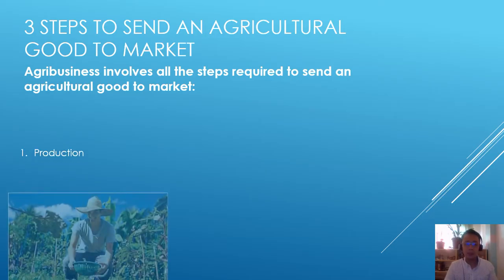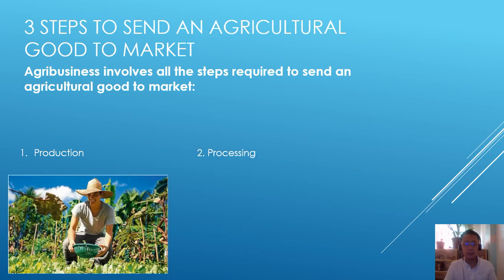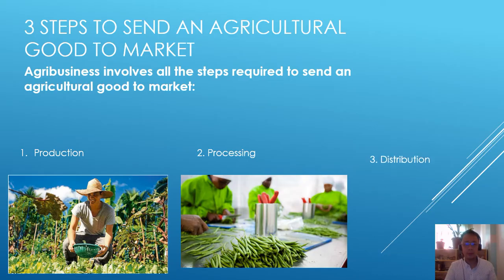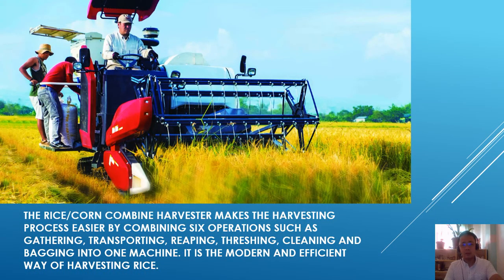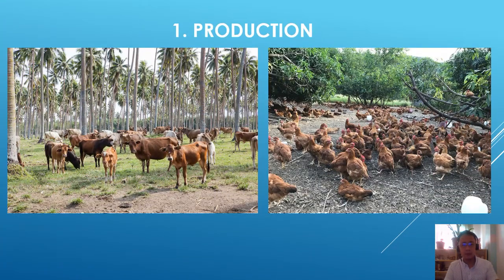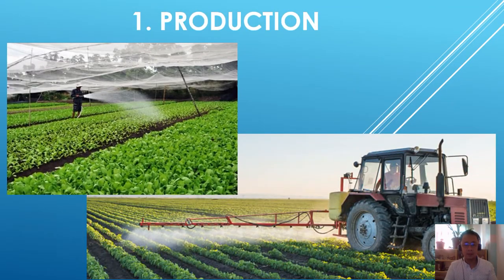The first step is production. This includes rice harvesting — you can see the rice harvester — as well as cattle raising. Another example of production is free-range chicken, and also the production of lettuce, including using advanced technology in producing vegetables.